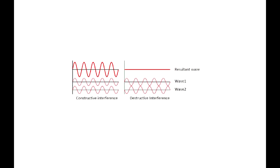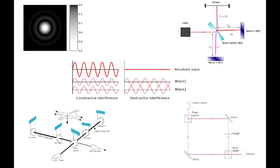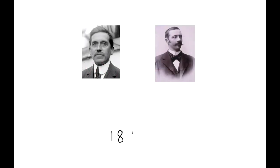Interferometry is a family of techniques based upon the principle of superposition of waves. The Fabry-Perot interferometer is one of several interferometers used today in a variety of fields. It was developed in 1899 by Charles Fabry and Alfred Perot.